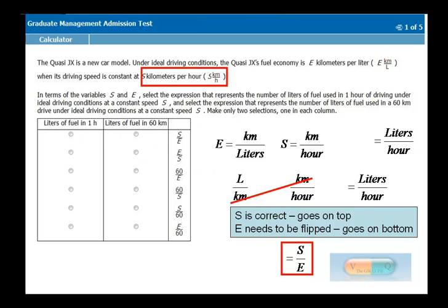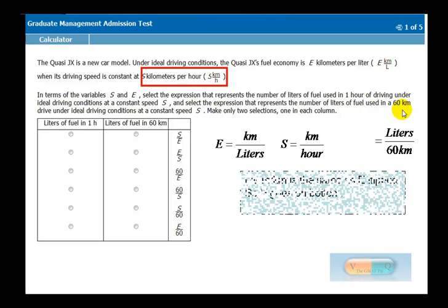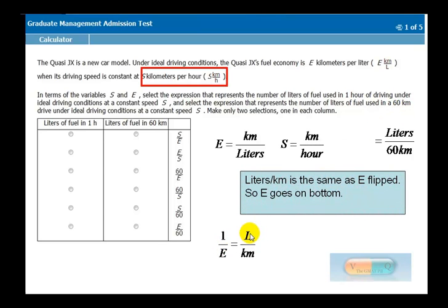The second question asks you, how do you get liters of fuel per 60 kilometers? You go through the same process with 1 over E and you're already there. The only difference is the 60. You just add the 60 on the top. And that would give you the number of liters per 60 kilometers. And that's 60 over E. That would be this answer choice here.